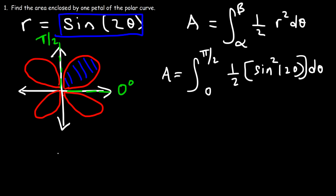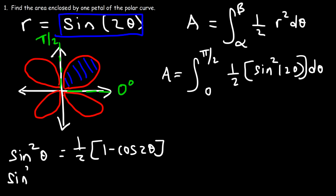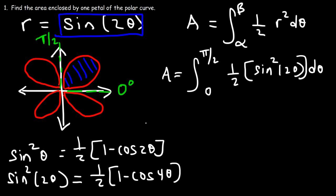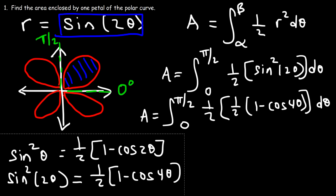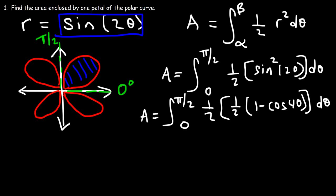Now in order to evaluate this definite integral, you need to be familiar with the power-reducing formulas. For example, sine squared theta is one-half times (1 minus cosine 2 theta). So sine squared 2 theta — we're going to have to double the angle from 2 theta to 4 theta. So we replace sine squared 2 theta with one-half times (1 minus cosine 4 theta). We can then multiply a half times a half, which is one-fourth, and move that to the front.